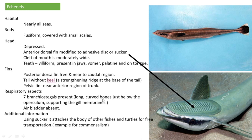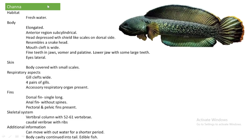The air bladder is absent. An additional feature: using its sucker, Echinus attaches to the body of other fishes for free transportation. This is an example of commensalism, as it does not cause any harm to its host.